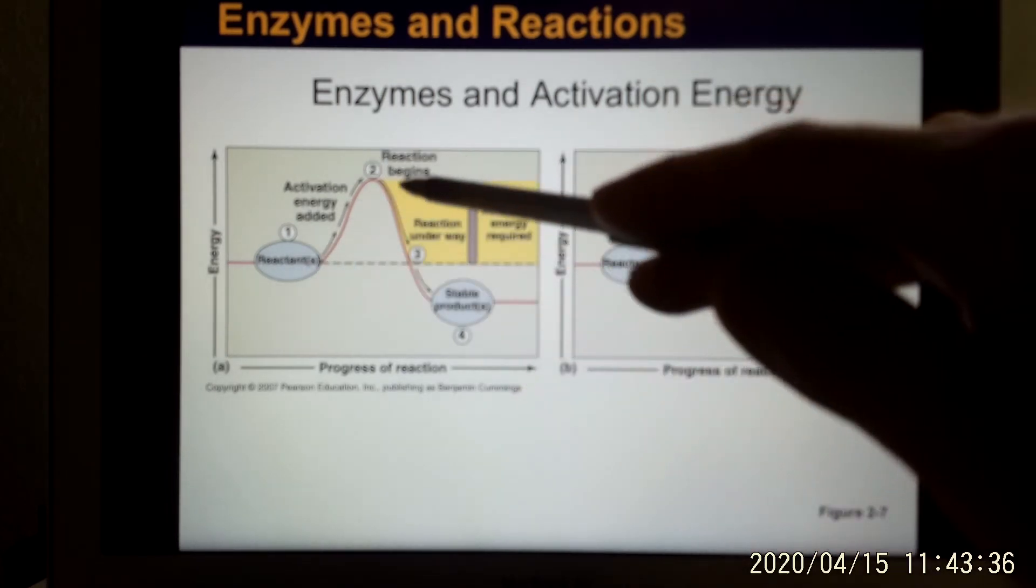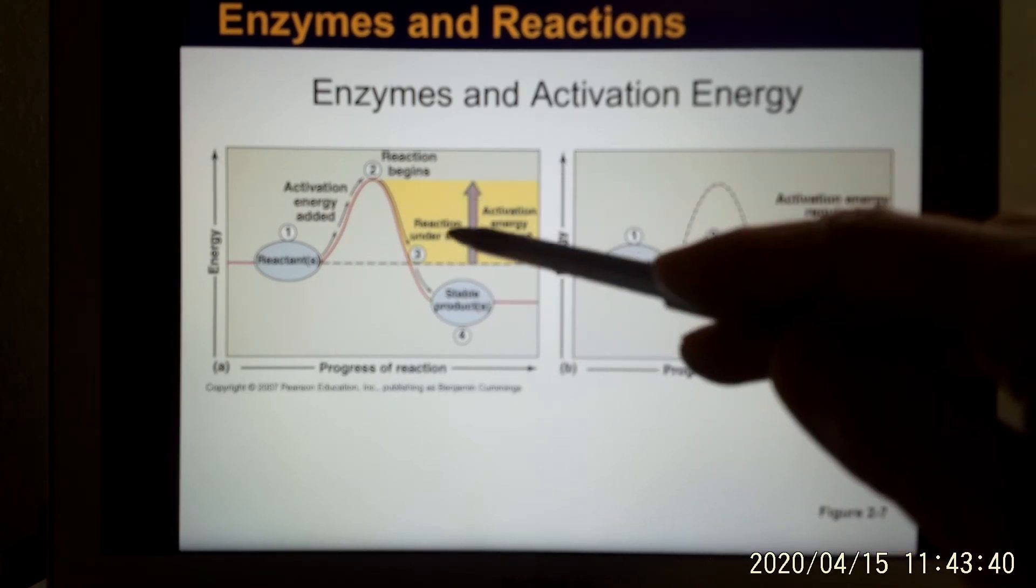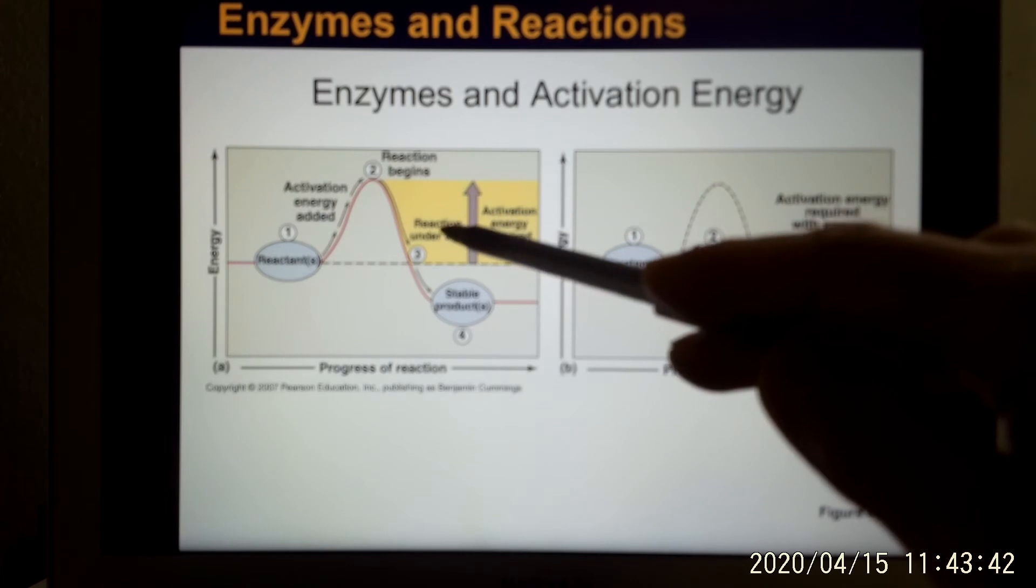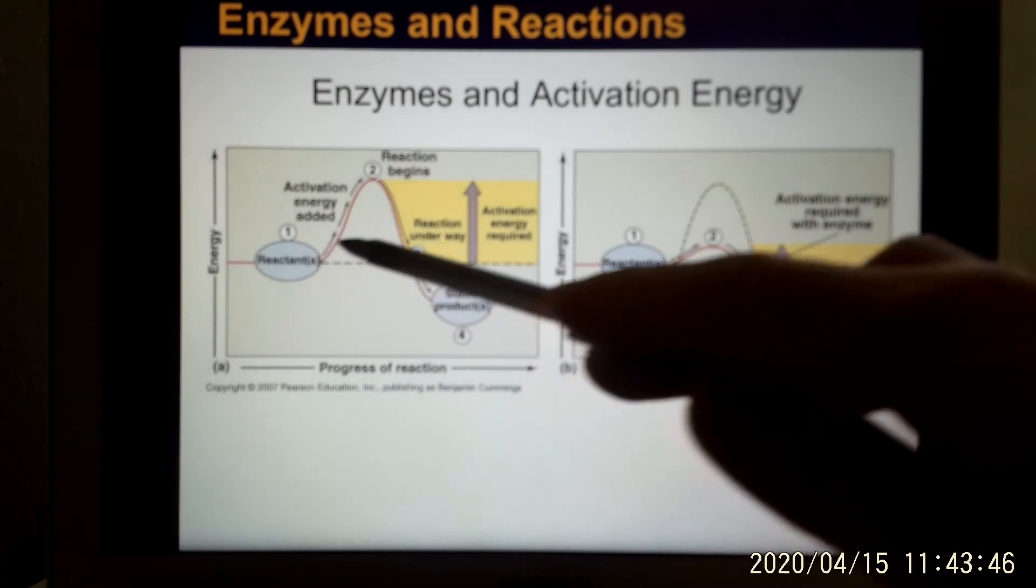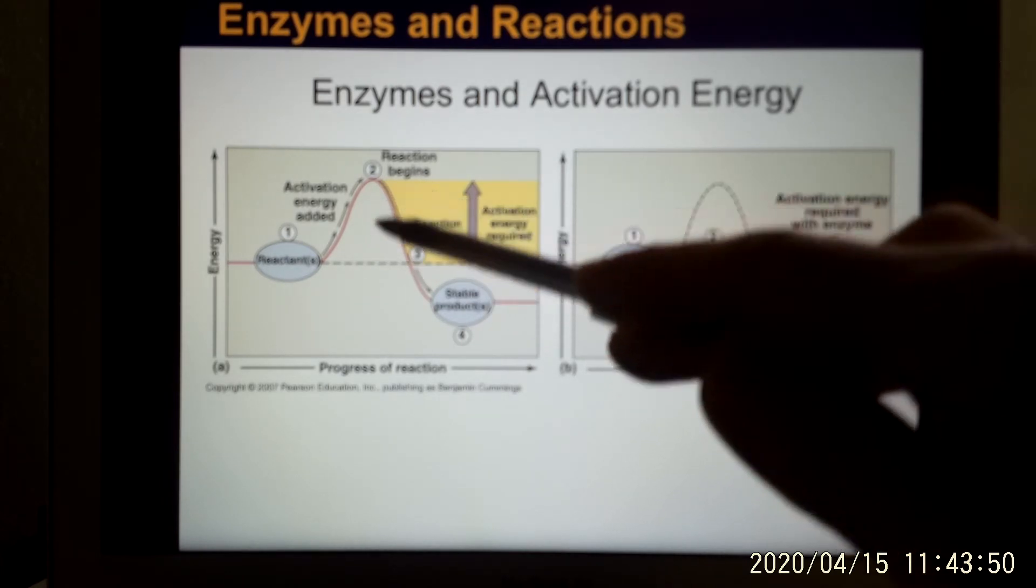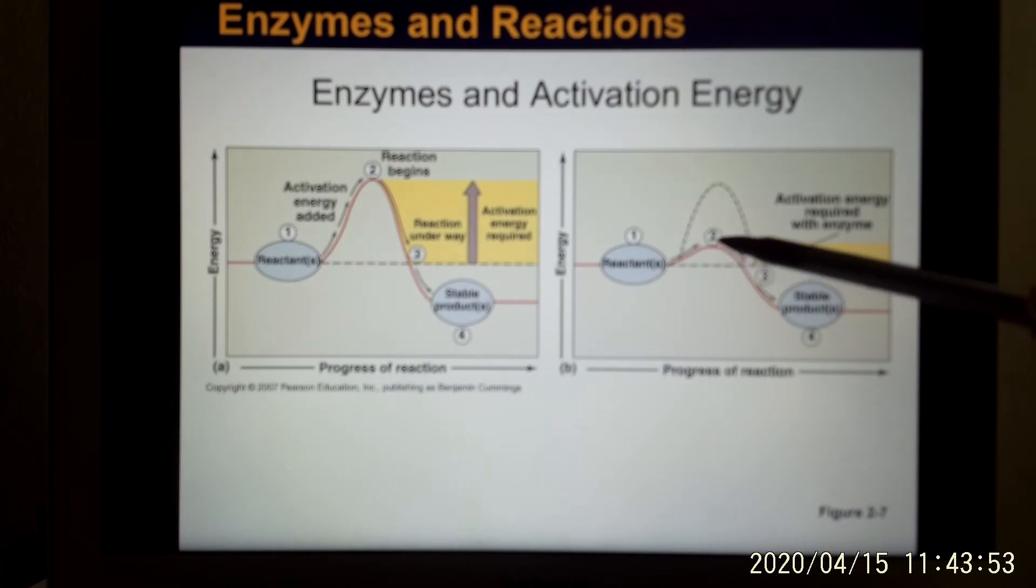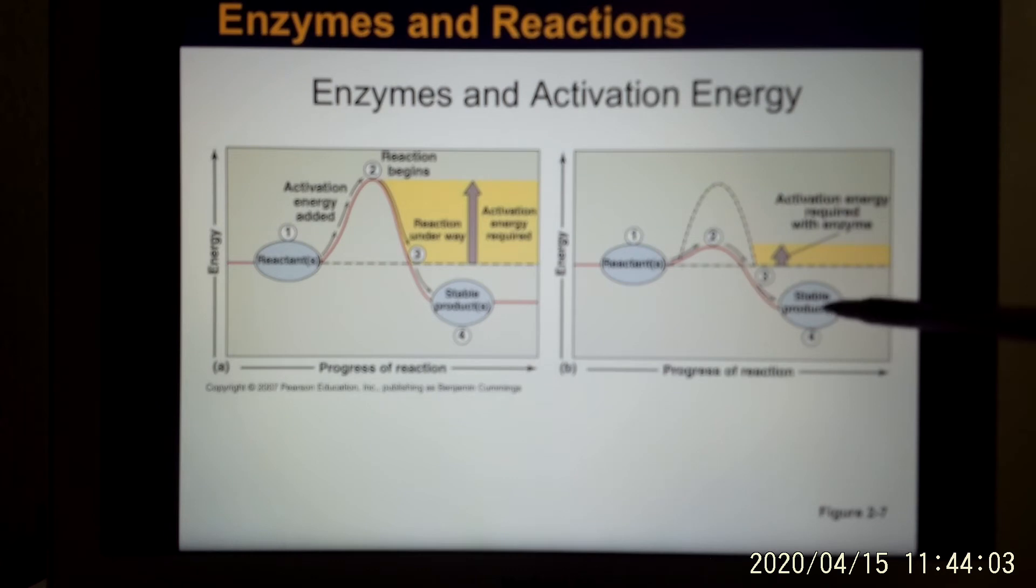In your body, you cannot create a fire, you cannot burn a hole, so what happens is we use the enzyme. Enzymes' job is not to change the reactant or the product, they just lower the energy required. So what happens is after enzyme, the energy required is so low, this can happen in your body temperature. This enzyme's function is to lower the energy required, still the same reactant, still the same product.